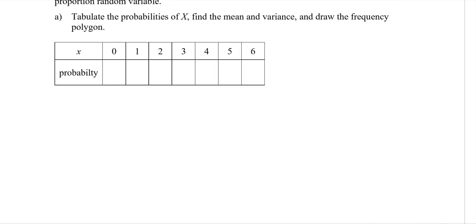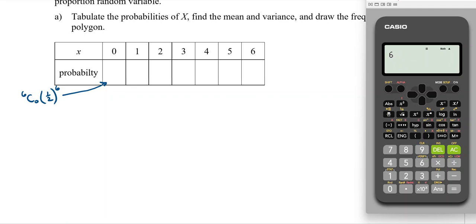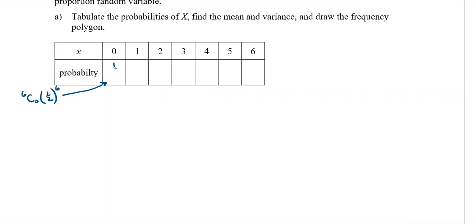To calculate the probabilities: for zero heads we use 6C0 times (1/2)^0 times (1/2)^6. It's always going to be (1/2)^6. That gives 1/64, which as a decimal is 0.02. For the next one: 6C1 times (1/2)^6, because however many failures and successes there are, they always make six.